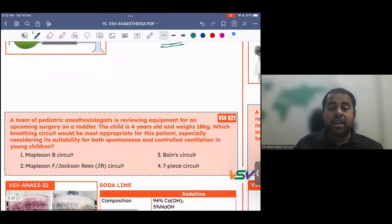A team of pediatric anesthesiologists is reviewing equipment for an upcoming surgery on a toddler. The child is 4 years old and weighs 18 kilos. Which breathing circuit should be most appropriate for this patient, especially considering its suitability for use in both spontaneous and controlled ventilation in children? What is the answer? Mapleson F or Jackson Rees circuit.